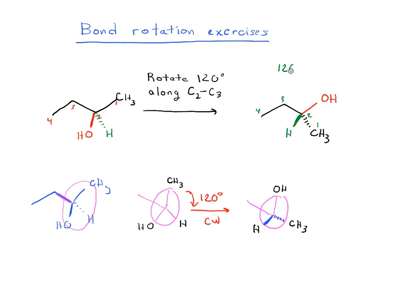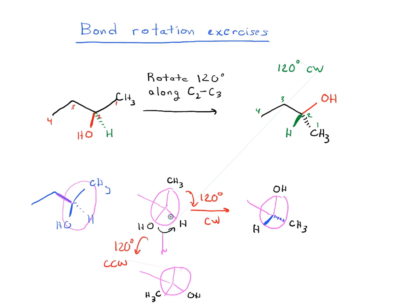Now what if we did it counterclockwise? So if we rotated it 120 degrees counterclockwise, what would that give us? Let's redraw everything here. Our CH₃, instead of going to the right, would go to the left. So our CH₃ would be here. Then that would bring our OH over here. And that would put our H at the top. So again, I'm having to redraw all of this in our dash-wedge formation. This CH₃ is on the left here, which is where our OH was — which was a wedge.